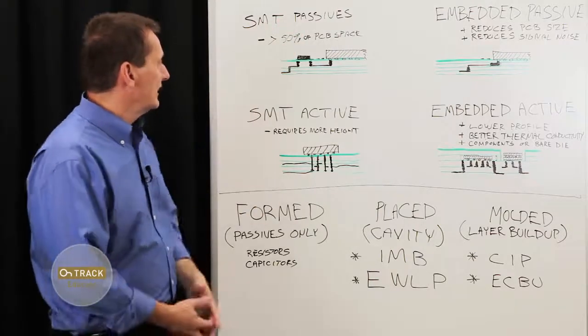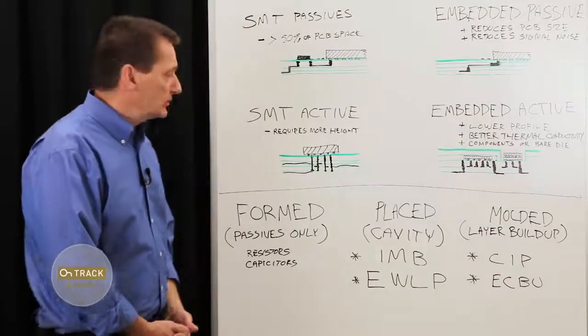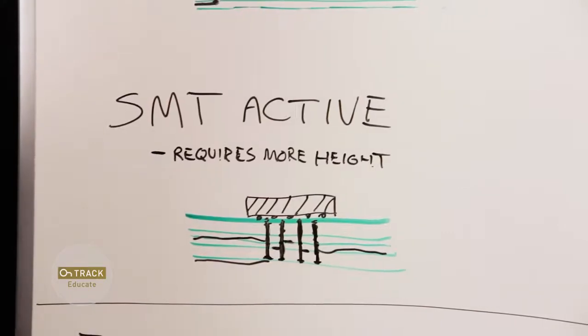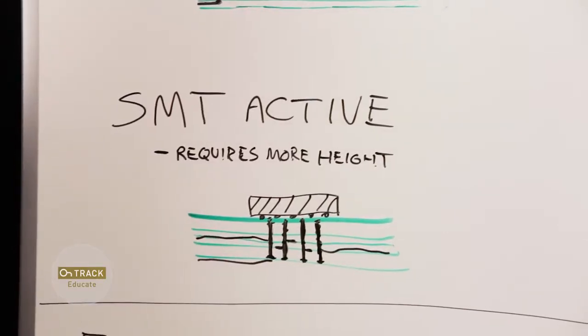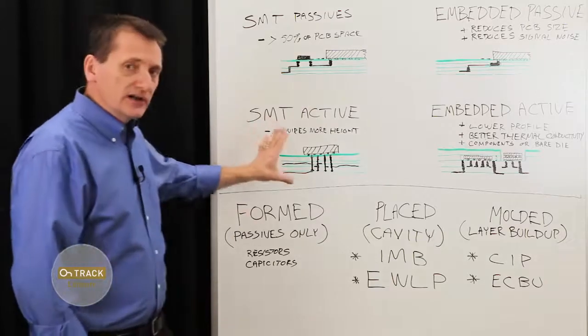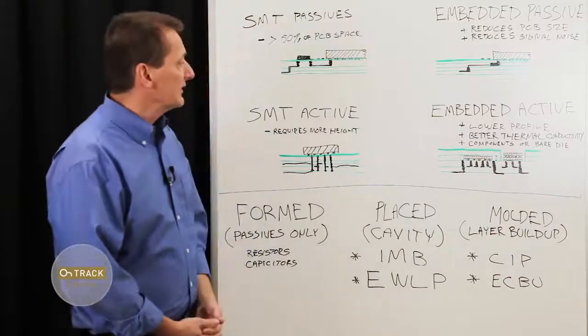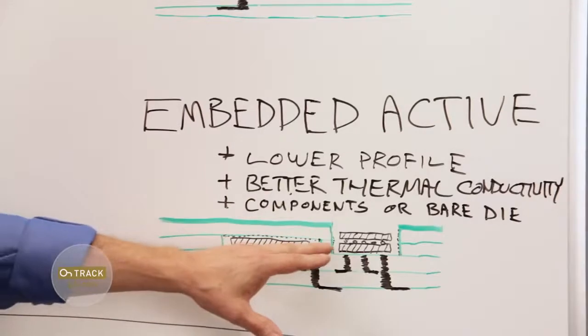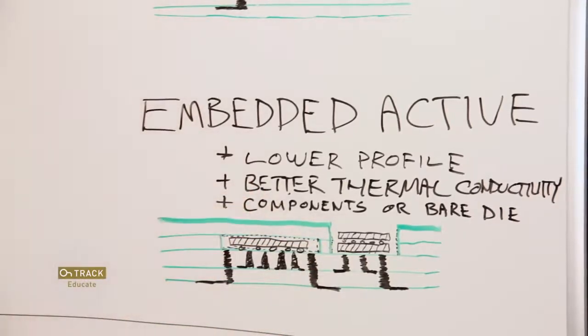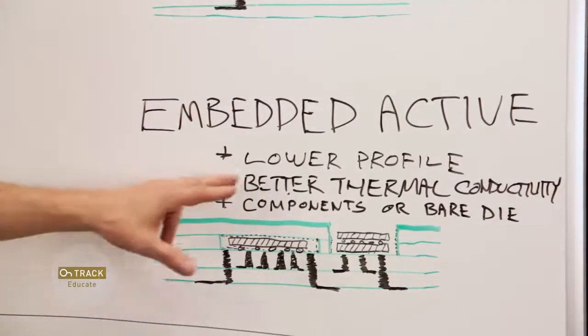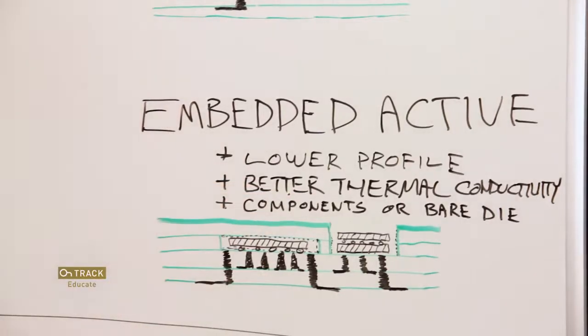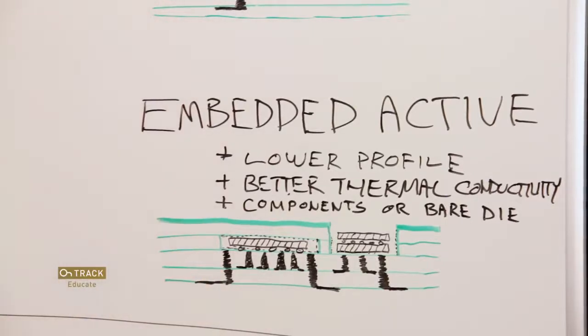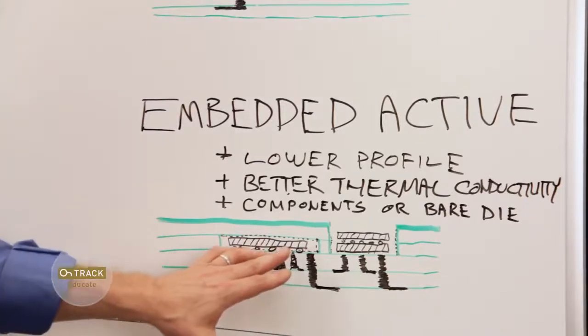If we look at active components, generally a lot of active components on your board will take up height and they start to generate a little bit of heat which needs to be channeled out and dissipated. So the benefit of embedding active components is that number one, it achieves a much lower profile. If we can embed the components below the surface of the board, then we gain that height. These also provide better thermal conductivity. If these can be arranged within the ground plane, we can thermally conduct heat and dissipate that out and manage the thermal effects better.